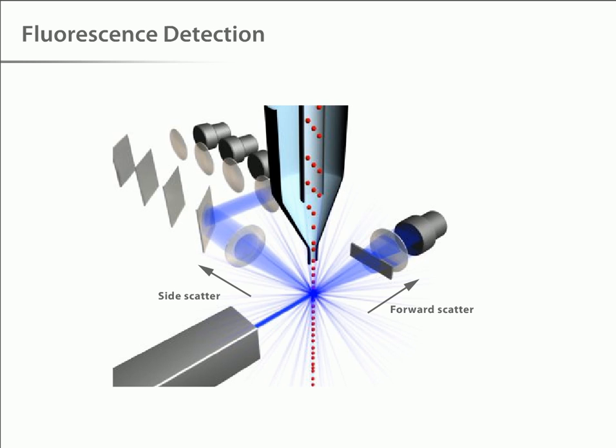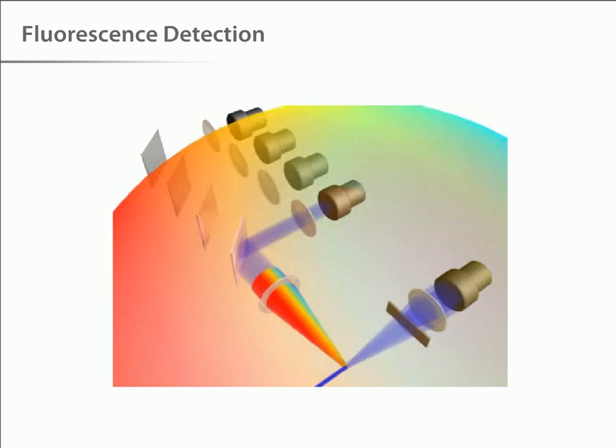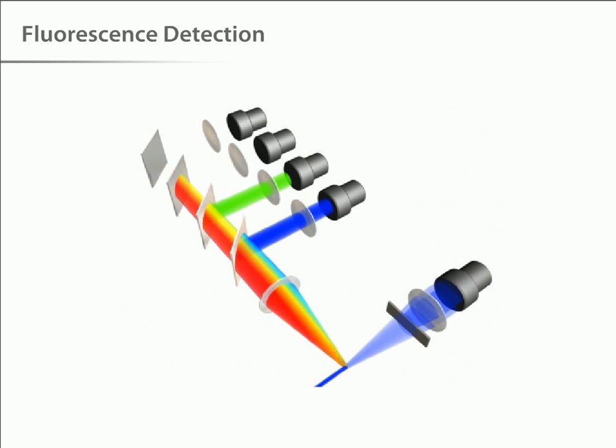How is this fluorescence information collected? The fluorescent light, coming from labeled cells as they pass through the laser, travels along the same path as the side scatter signal. As the light travels along this path, it is directed through a series of filters and mirrors so that particular wavelength ranges are delivered to the appropriate detectors.